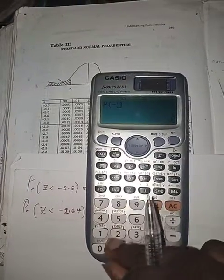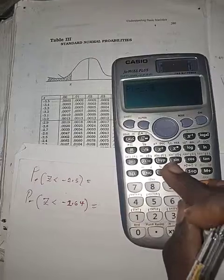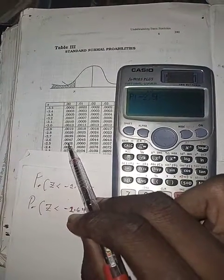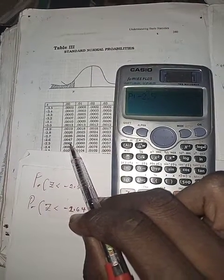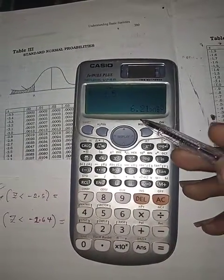Let's confirm whether it correlates with the value we have here. Minus 2.5 is 0.0062, and that will give us an answer in standard form.